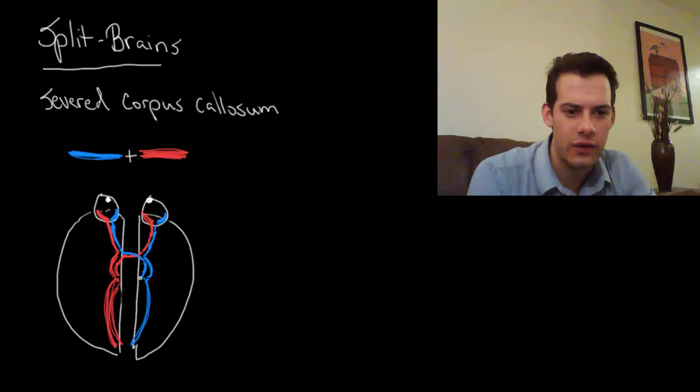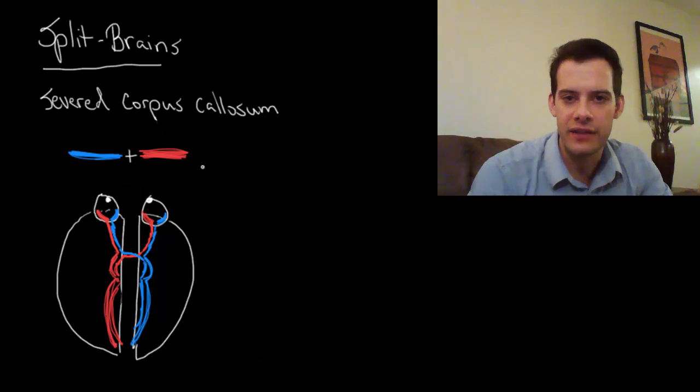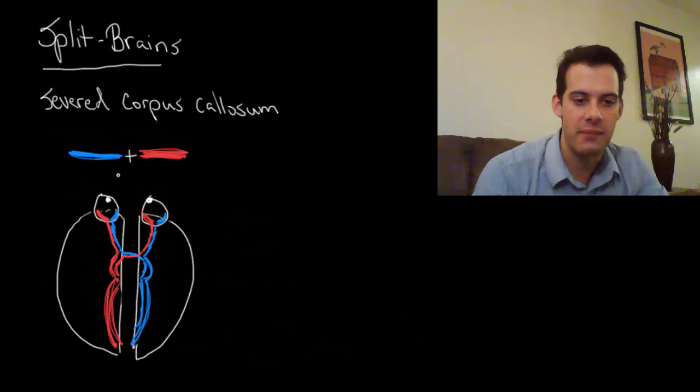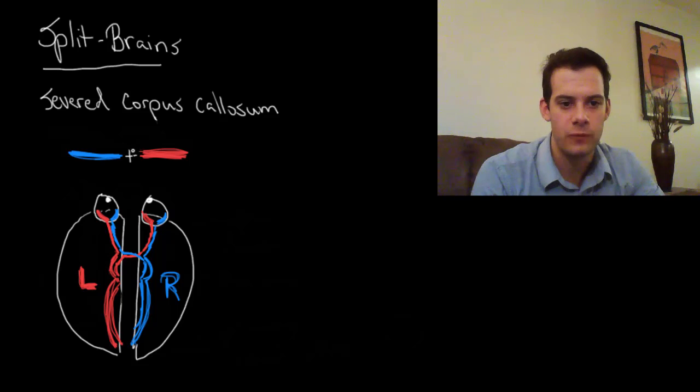So what this means is that everything in the right visual field goes to the left hemisphere, and everything in the left visual field goes to the right hemisphere. So this is the right hemisphere over here, it's only seeing blue information, and this is the left hemisphere here, which is getting the right visual field, which is all red.